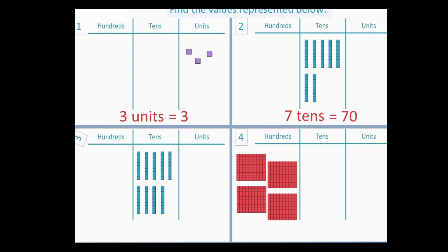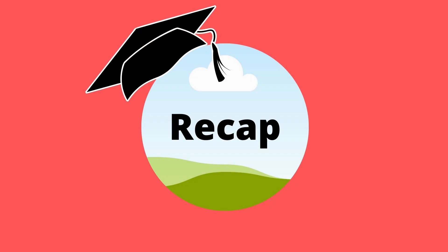Question number three: one, two, three, four, five, six, seven, eight, and nine — nine tens, which is 90. Question four: we have one, two, three, four — four hundreds, which is 400.